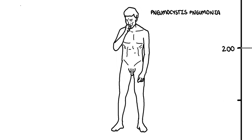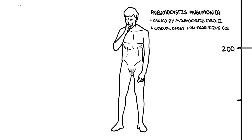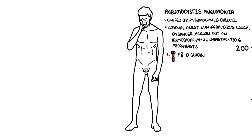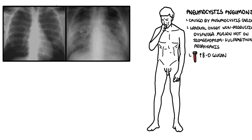Pneumocystis pneumonia is the most common cause of death in patients with AIDS. It's caused by Pneumocystis carinii. It presents with gradual onset of low-grade fevers, a non-productive cough, dyspnea, and the person is not receiving trimethoprim-sulfamethoxazole prophylaxis. Laboratory tests show an increase in beta-D-glucan and a potential increase in LDH. Chest x-ray findings show diffuse bilateral infiltrates or ground glass changes.